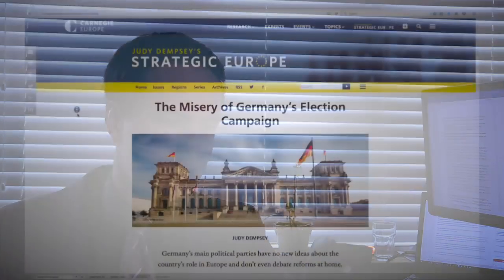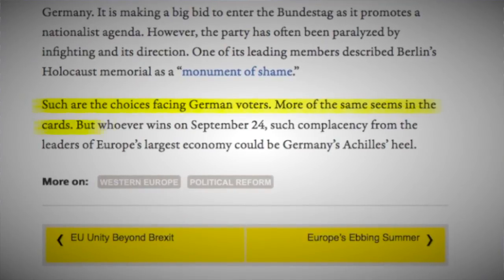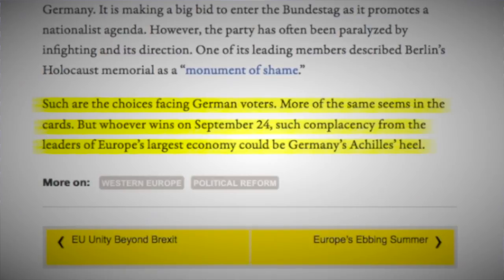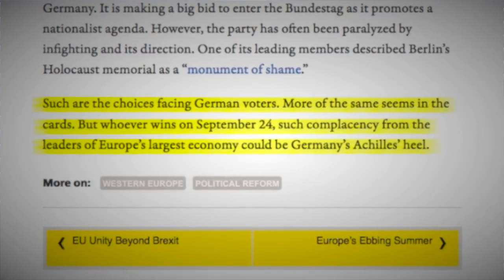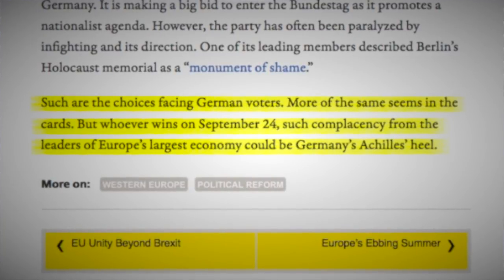Now, the election does look like it's probably in the bag for Chancellor Angela Merkel. But Carnegie Europe concludes that such are the choices facing German voters. More of the same seems in the cards. Whoever wins on September 24th, such complacency from the leaders of Europe's largest economy could be Germany's Achilles' heel. And they're not the only ones talking like this.